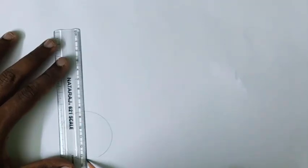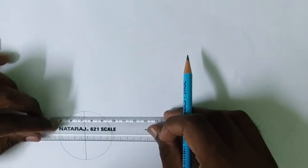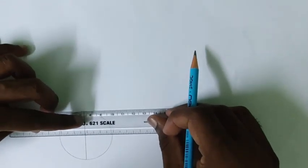Actually we have to use a drafter to draw exact vertical and horizontal lines. As I don't have a drafter now I am drawing using this simple scale. I have to divide it by drawing a vertical line and by drawing a horizontal line.